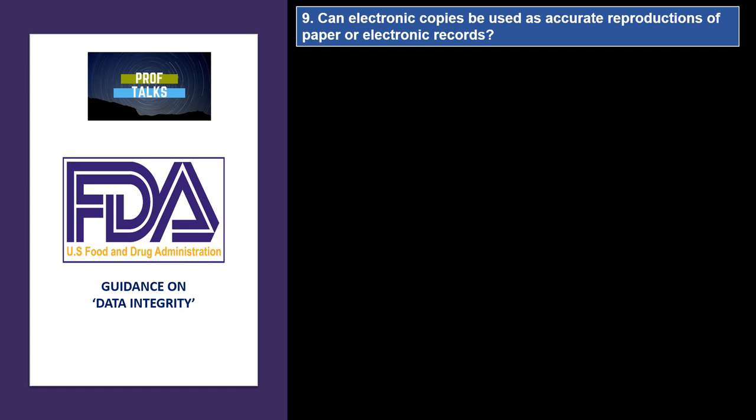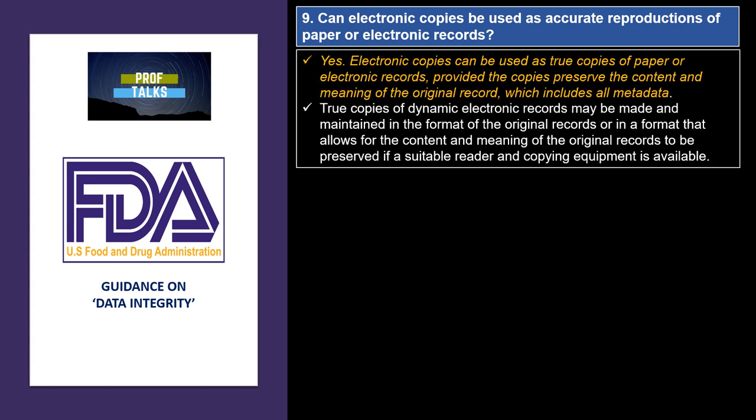Can electronic copies be used as an accurate reproduction of a paper or electronic record? The answer is yes. Electronic copies can be used as true copies of paper or electronic records, provided the copies preserve the content and meaning of the original record, including the metadata. True copies of dynamic records may be made and maintained in the format of original records.